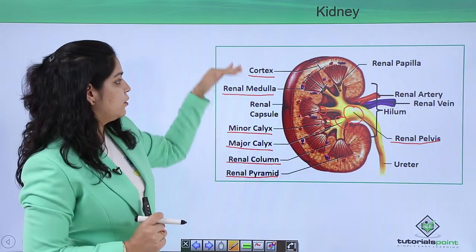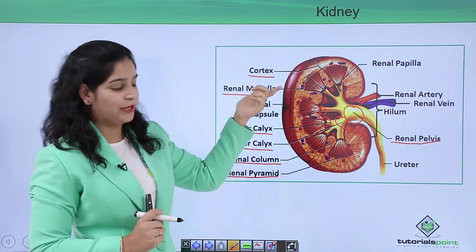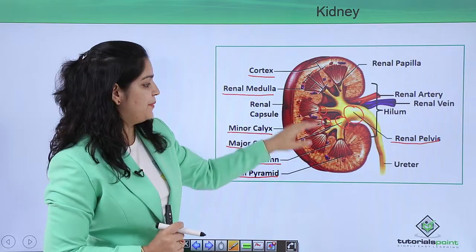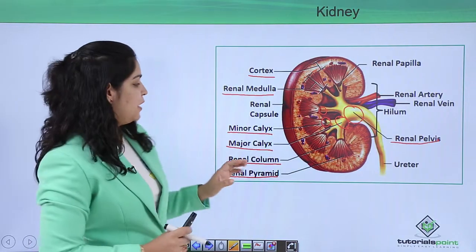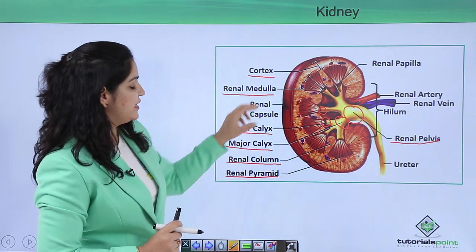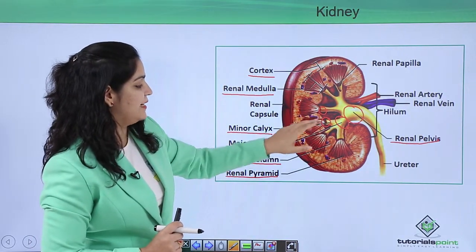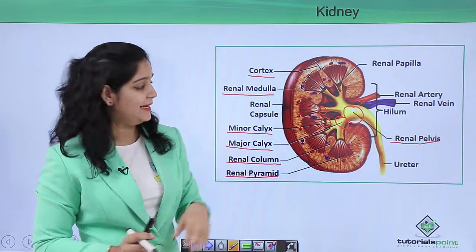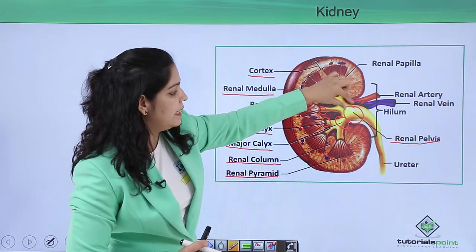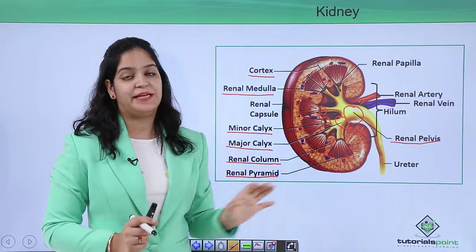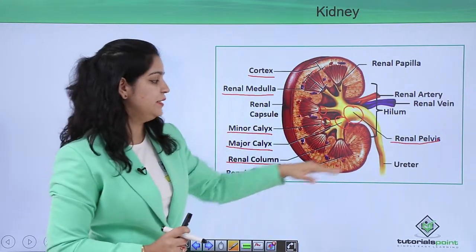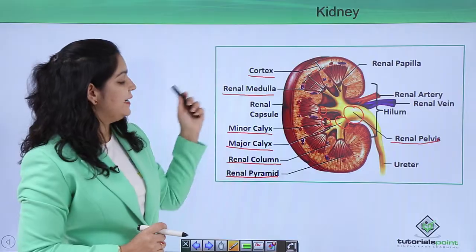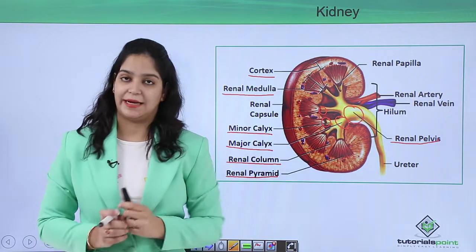So this is the full structure of the kidney. The two main parts are the cortex and the medulla. The medulla contains triangular-shaped pyramids which narrow at the minor calyx, which further goes to the major calyx, then to the renal pelvis, and finally out of the kidney through the ureter.